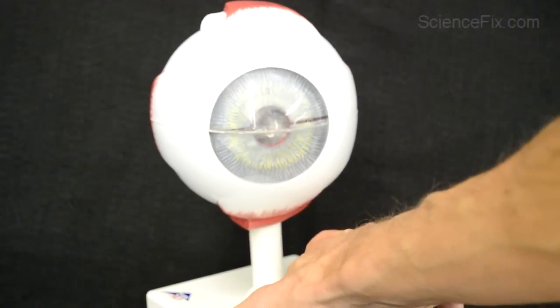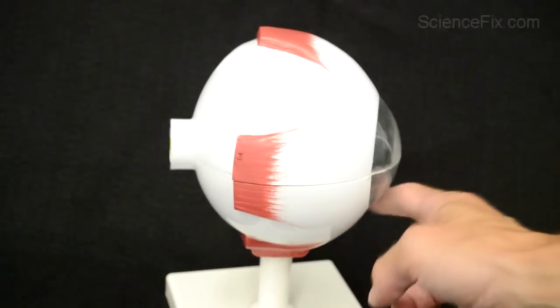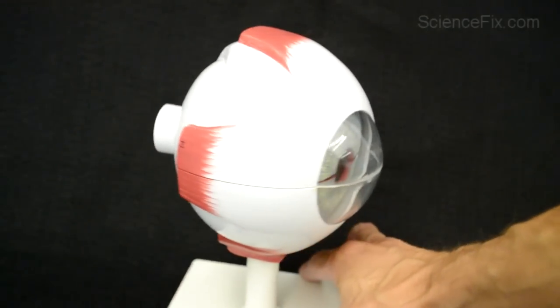And if it gets damaged, light has a hard time passing through it, through the pupil and into your retina, so a person cannot see very clearly.